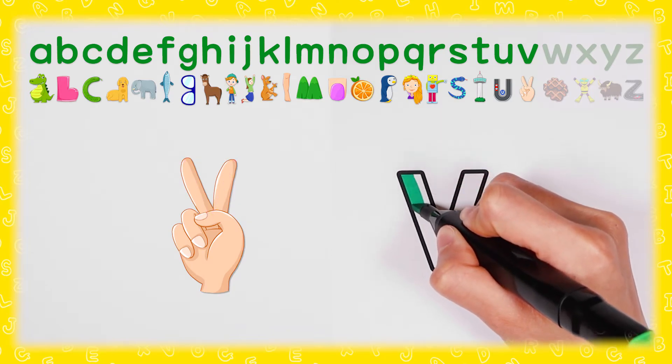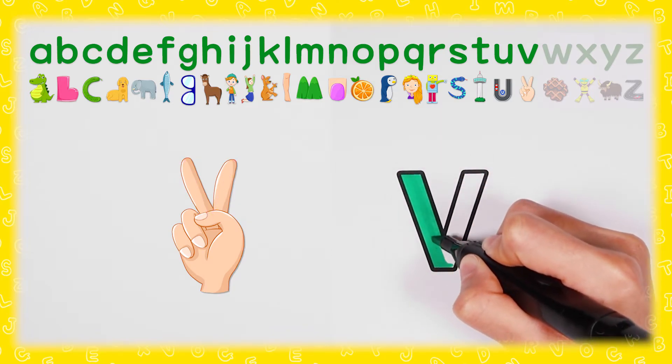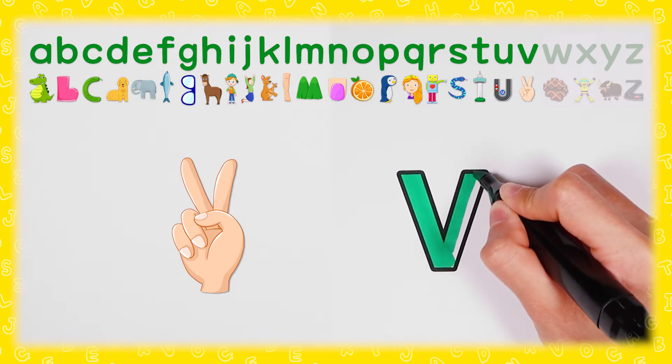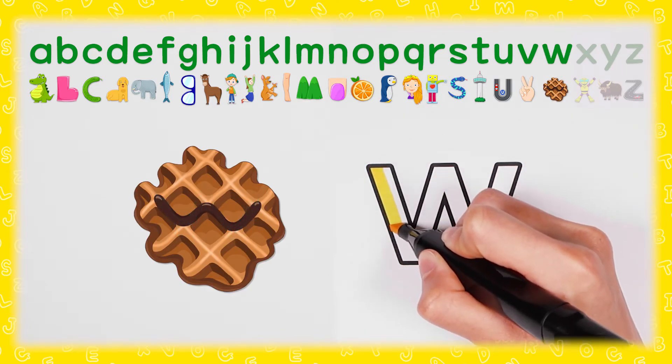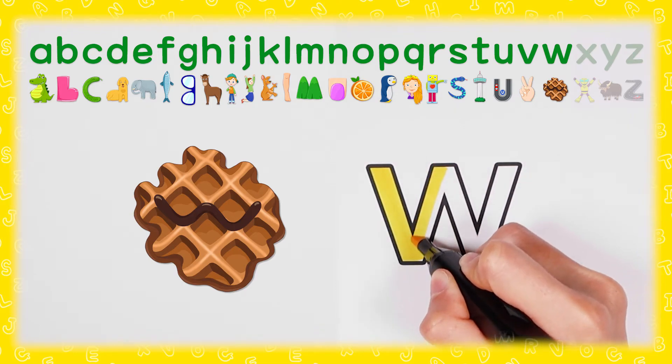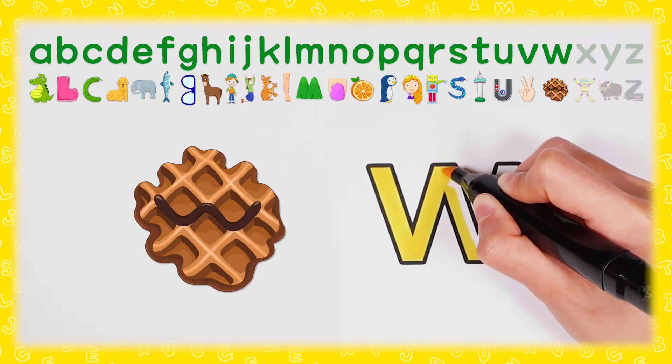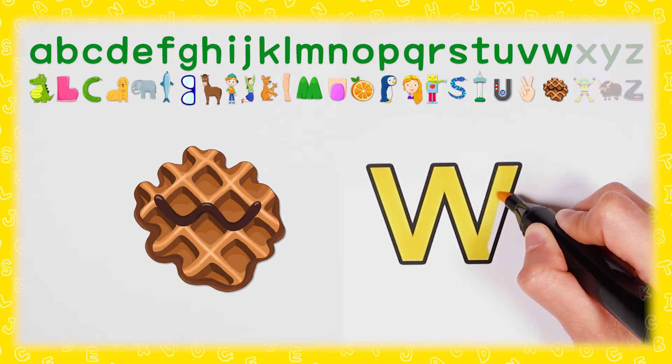V, 승리의 빅토리 V V (victory). W, 체크무늬 와플 W W (checkered waffle)